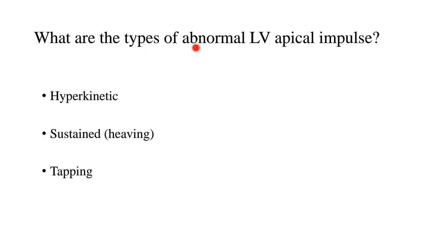What are the types of abnormal LV apical impulse? There are three main types: one is hyperkinetic, second is sustained or heaving, and the third is tapping.